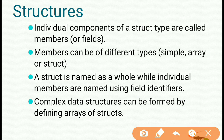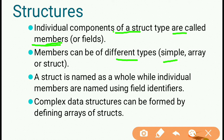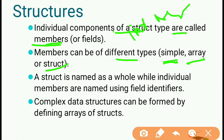The individual components of structure types are called members or fields. For example, integer age, height, weight, and other variables are members of a structure. Members can be of different types: a member can be a simple variable, an array, or another structure. So members have three different types.